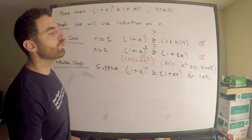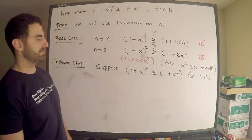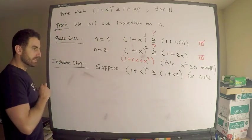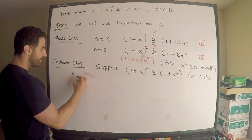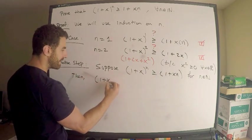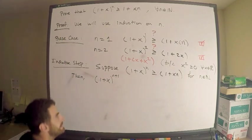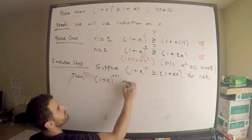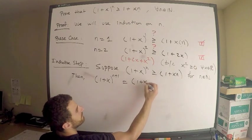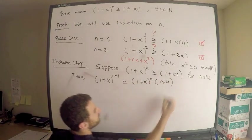We look at the n plus 1th case. So consider, so then what is 1 plus x to the n plus 1? Well, let's just do some easy algebra. This is equal to 1 plus x to the n, 1 plus x.